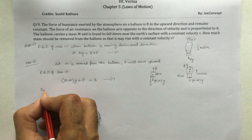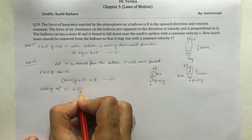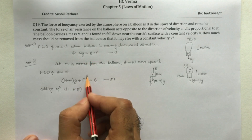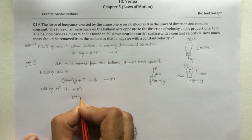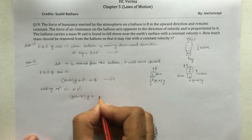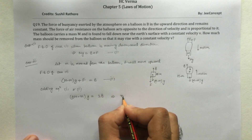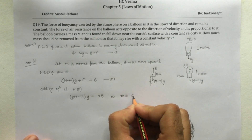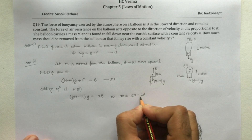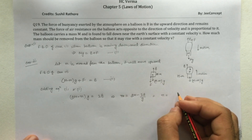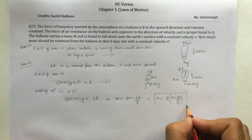Adding equation 1 and equation 2: the F terms cancel each other out, and the entire equation becomes 2(M - m)g = 2B. That means small m is equal to 2M minus 2B/g. So m = 2(M - B/g). This is the solution of this problem.